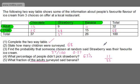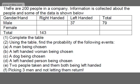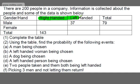So that's a basic two-way table — we've completed it and answered some questions from the information. Let's look at another. There are 200 people in a company. Information is collected about the people and some of the data is shown below. We've got gender — male or female — and whether they're right-handed or left-handed. Those are the two different categories in our two-way table.